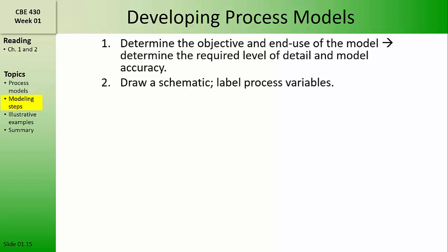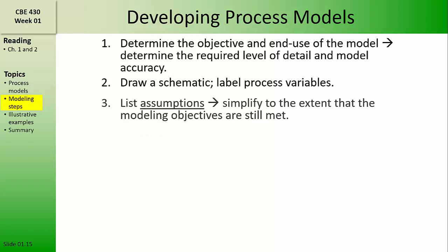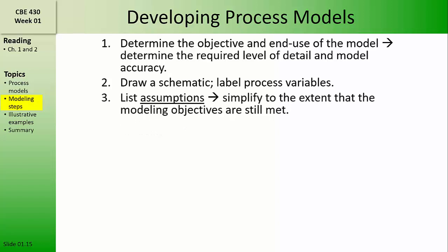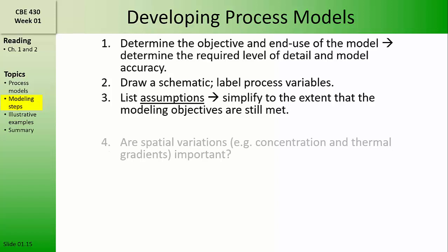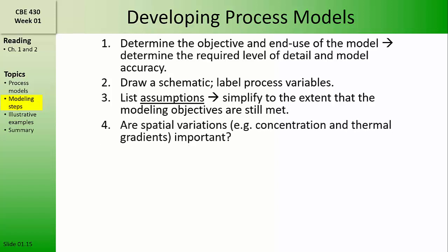Next, we should draw a schematic and label important process variables, and then we should list assumptions. Assumptions should be used to simplify the model to the extent that the modeling objectives can still be met. Then, we'll ask the question: are spatial variations important, such as concentration and thermal gradients? If so, then we'll likely have a partial differential equation model.